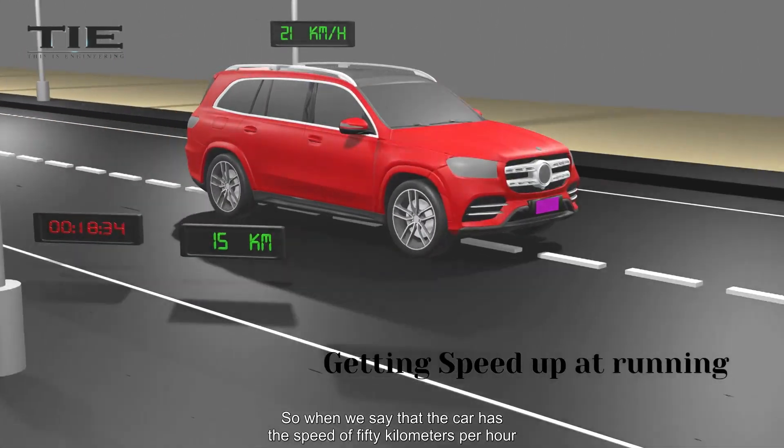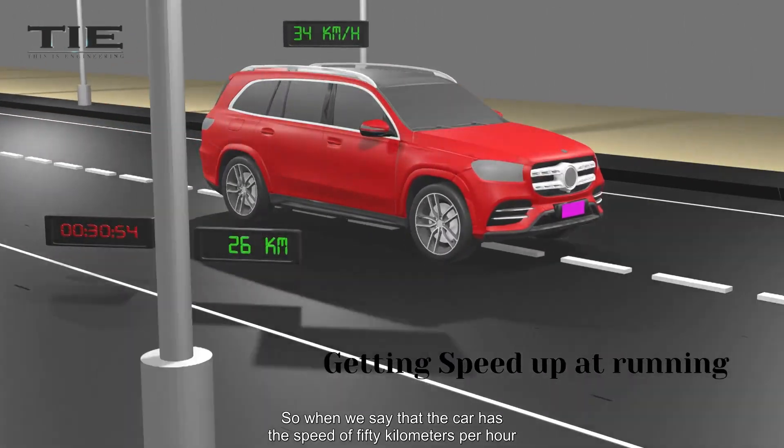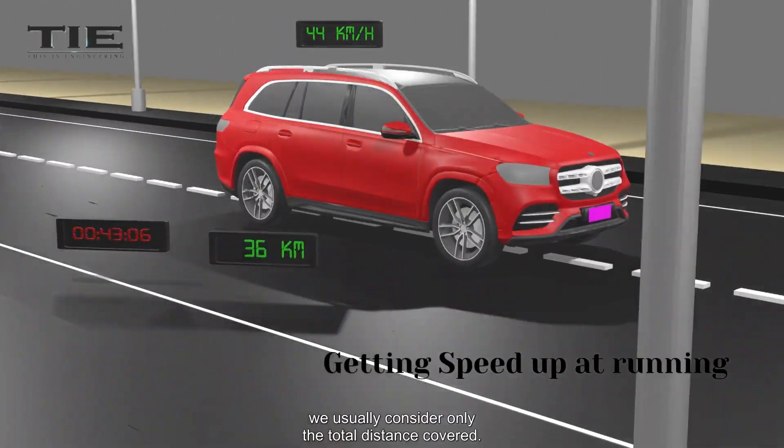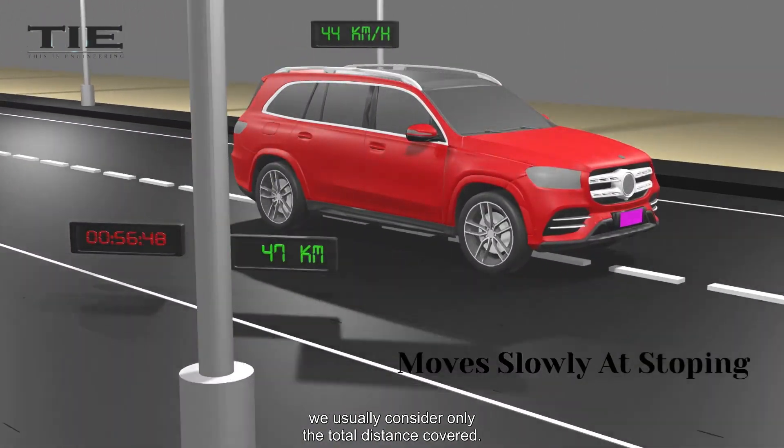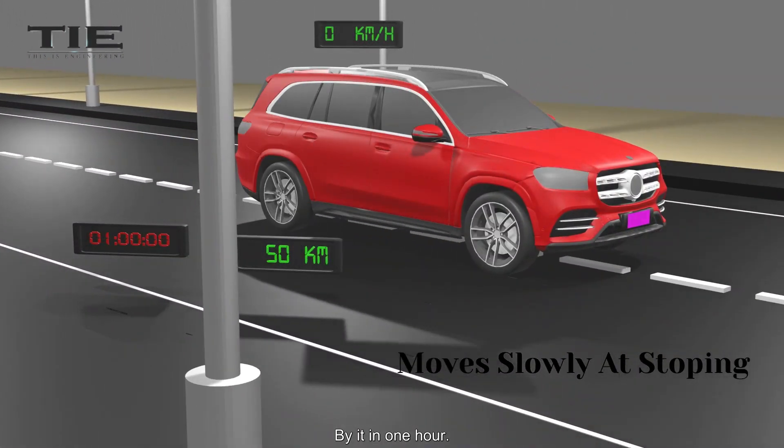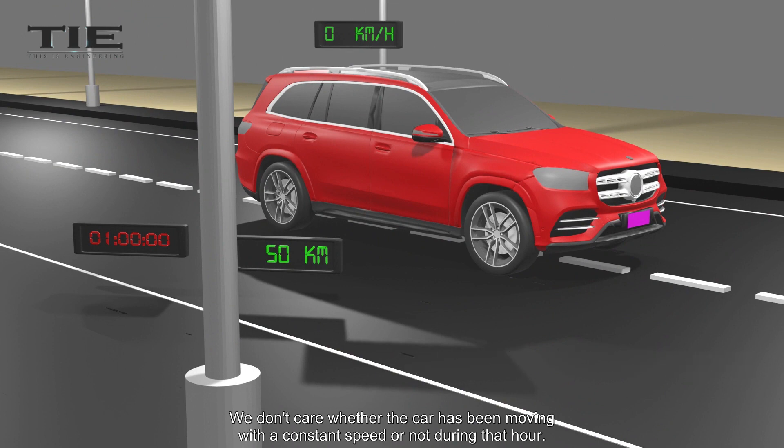So when we say that the car has a speed of 50 kilometers per hour, we usually consider only the total distance covered by it in 1 hour. We don't care whether the car has been moving with a constant speed or not during that hour. The speed calculated here is actually the average speed of the car. Here, we shall use the term speed for average speed.